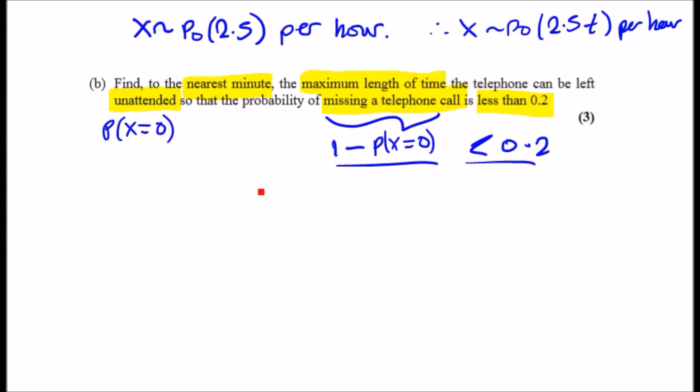So let's rewrite the statement. So we've got one minus the probability x equals zero. So using a Poisson distribution it will be e to the minus lambda, so e to the minus 2.5t, times lambda which is 2.5t to the power 0 over 0 factorial. Okay, and all of this would be 1 so I don't know why that's even there, and all of this would be less than 0.2.